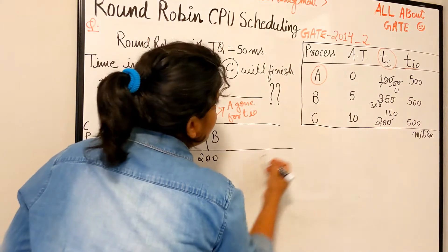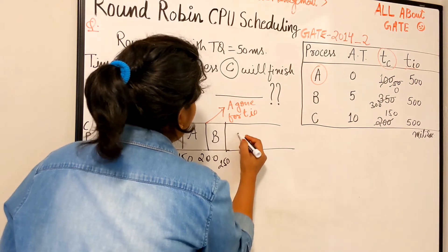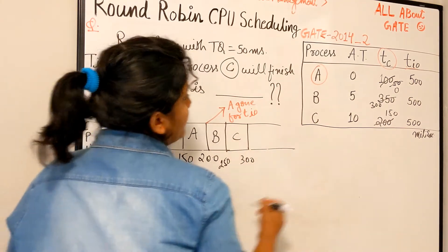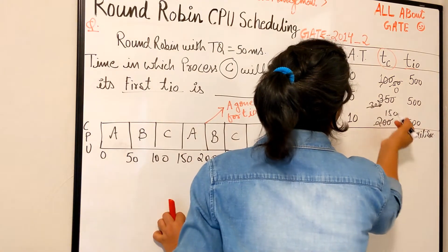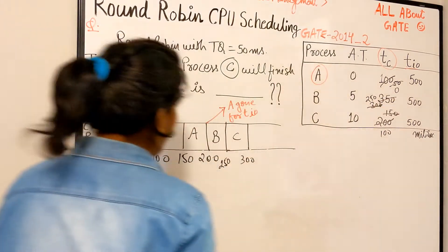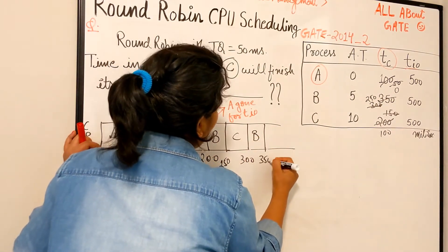And more, it becomes 250, right? Now comes C, it becomes 300. Okay, so this goes down, this goes down, this becomes 100, this becomes 250. All right, once again B needs more, it becomes 350.